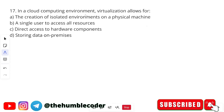In a cloud computing environment, virtualization allows for: the creation of isolated environments on a physical machine, a single user to access all resources, direct access to hardware components, or storing data on devices. The correct answer is option A — the creation of isolated environments on a physical machine.